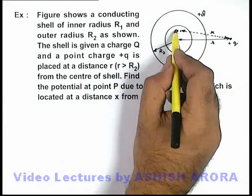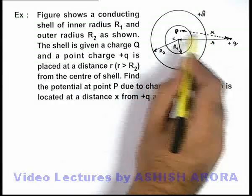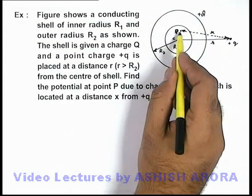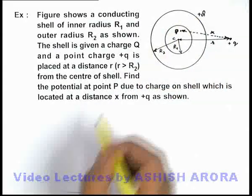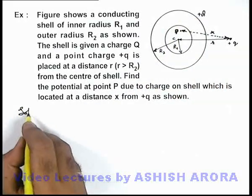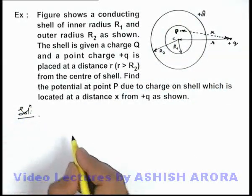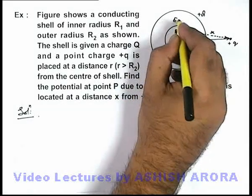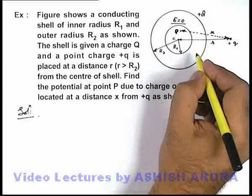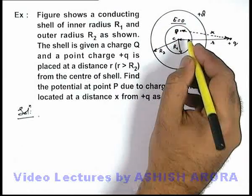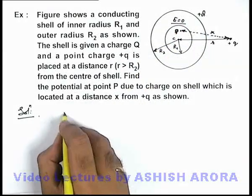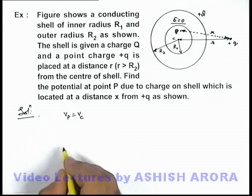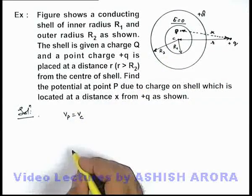Point P is located at a distance x from the charge +q, and we are required to find the potential at point P due to the charges on the shell. In this situation, we can state that at every interior point of the shell the electric field is zero due to electrostatic shielding. Therefore, the potential at point P will be equal to the potential at point C, which is the center of the shell.